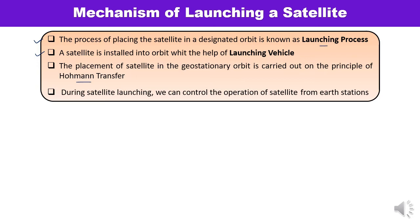When the satellite is launched, we can control the operations of the satellite from the earth station. There is a ground station on the earth from which you can transmit command signals. The command signals can be received by the satellite and accordingly the required operations can be performed, so controlling of operations can be done during satellite launching.